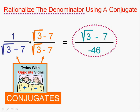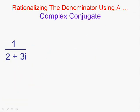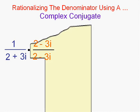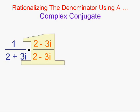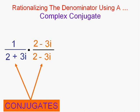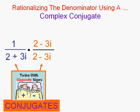Now we can play the same game when we have an i in the denominator — we have to play the same game. You're not allowed to have a radical in the denominator. An i is the square root of negative one, so i is a radical. So we use the conjugate — it just happens to be a complex conjugate. We're multiplying by one and using the conjugate, which is the odd couple: the twin of the other denominator with opposite signs.